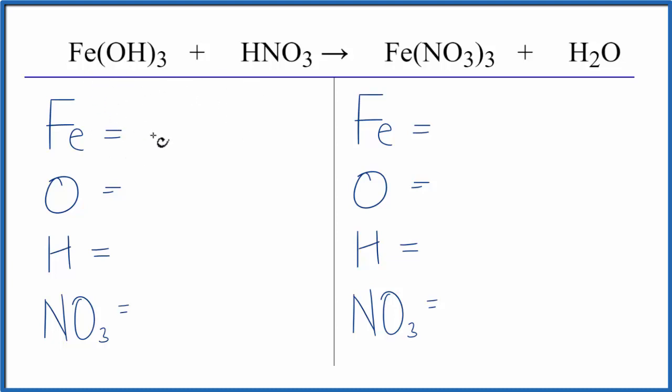Let's add the atoms up. One iron, and then three applies to everything in the parentheses, so three times the one oxygen, that's three. Three times the one hydrogen, that's three. And then we have to add this one hydrogen here, so that gives us four.